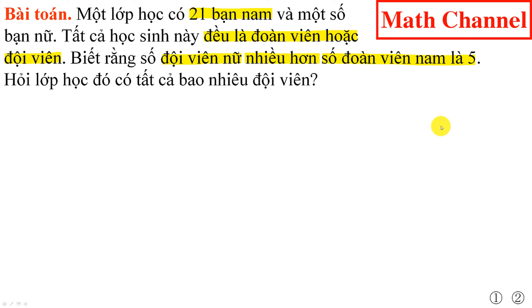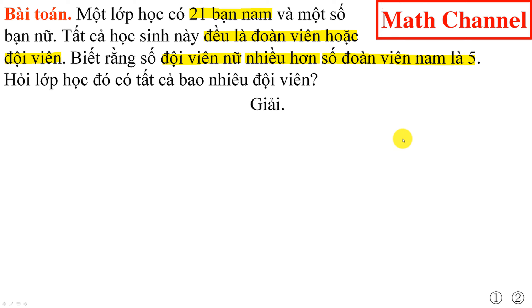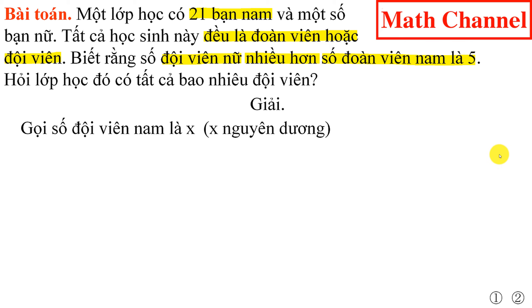Chúng ta đi vào giải bài toán. Yêu cầu bài toán là tìm xem lớp học đó có tất cả bao nhiêu đội viên, có nghĩa là chúng ta phải tìm số đội viên nam và số đội viên nữ. Như vậy chúng ta có thể gọi số đội viên nam là x, với điều kiện x là số nguyên dương.